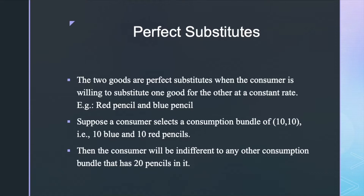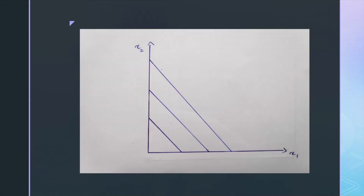Suppose a consumer selects a consumption bundle of 10-10, that is 10 blue and 10 red pencils. Then the consumer will be indifferent to any other consumption bundle that has 20 pencils in it. It can be 12-8, that is 12 blue and 8 red pencils, or 15-5, that is 15 red and 5 blue pencils, etc. But as more pencils is preferred to less, any bundle with more than 20 pencils will be preferred. In the figure, the indifference curves are parallel straight lines because the goods are perfect substitutes.